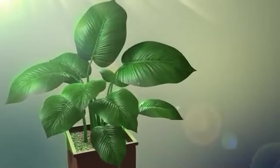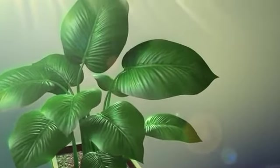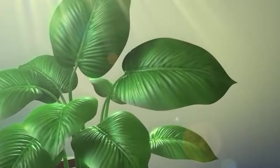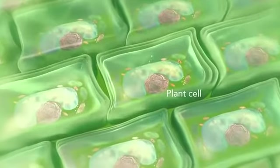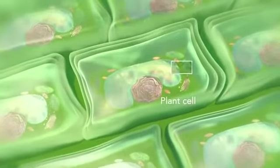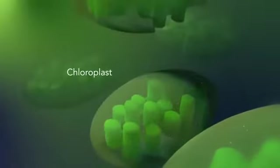Some organisms, such as plants that are photo-autotrophic, meaning they capture sunlight for energy, have cells with an organelle called a chloroplast. The chloroplast is where photosynthesis happens. It's green because it has a green pigment called chlorophyll.